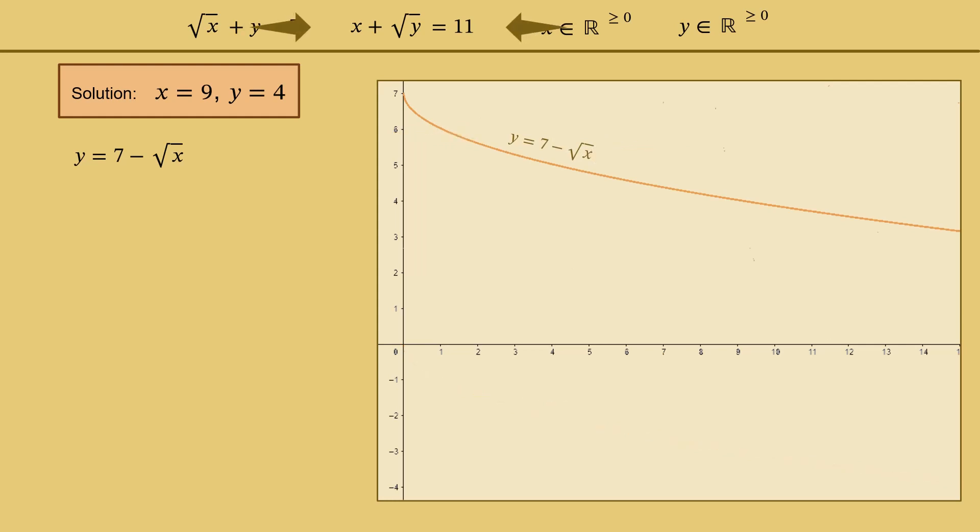The second equation of the system gives square root of y equals 11 minus x. And taking the square, we get y equals (11 minus x) squared, which can be also written as y equals (x minus 11) squared. The graph of this function, according to textbook, is a parabola y equals x squared, shifted 11 points rightward. And we see that the graphs have two common points, so it looks like the given system of simultaneous equations has two solutions.